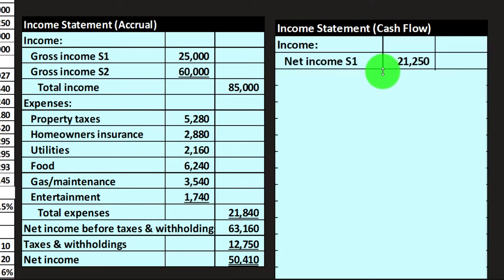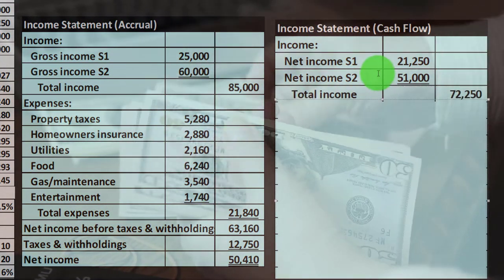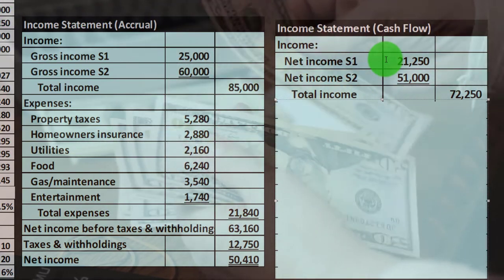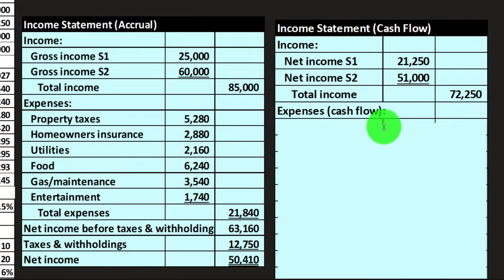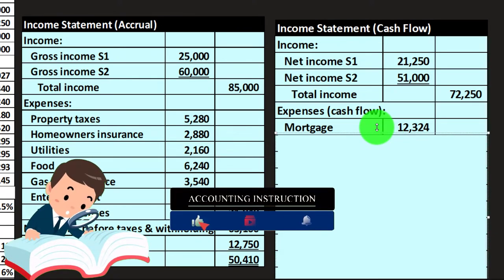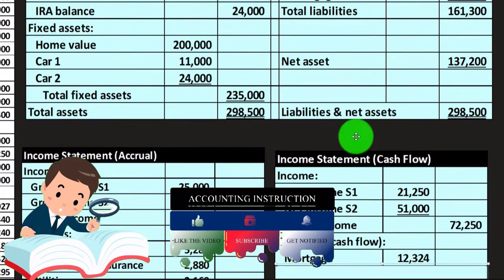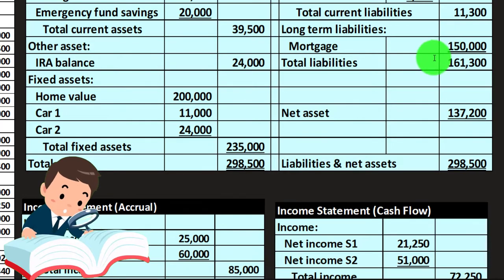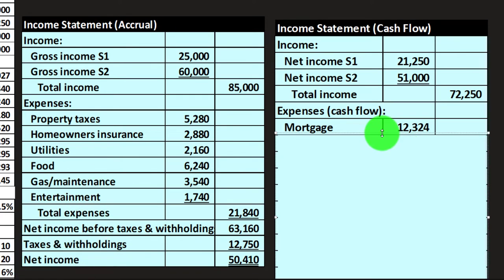If you use a cash basis method and connect to the bank in something like QuickBooks, you don't record the gross amount — you record the net amount. You might record the income as $72,250. Then the expenses would look similar, but now I'm going to add cash flow expenses including the mortgage. On an accrual system you'd record only the interest as expense and the principal would decrease the loan balance, but let's do cash basis here.